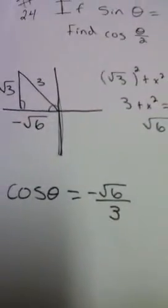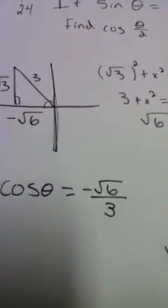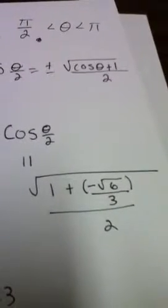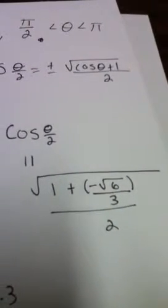So the cosine of theta equals negative square root 6 over 3. So cosine theta divided by 2 equals square root of 1 plus negative square root 6 over 3, over 2.